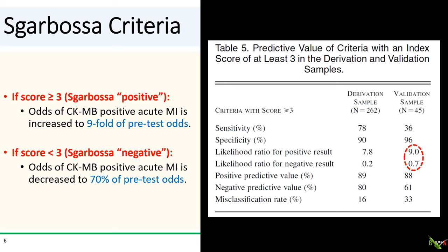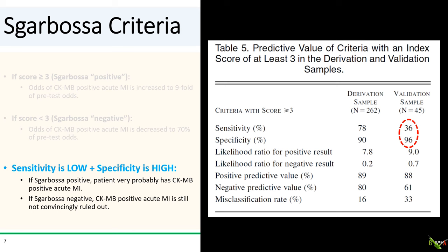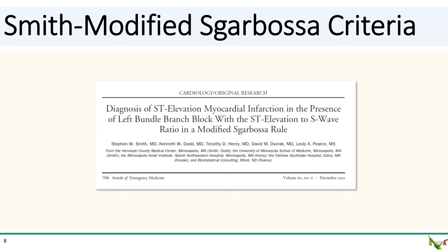This is usually not a sufficient difference to be helpful in making a decision. If your Sgarbossa is positive, your patient very probably has CKMB-positive acute MI. But if the Sgarbossa is negative, you really haven't ruled anything out. The specificity is high, but the sensitivity is quite low — only 36%.